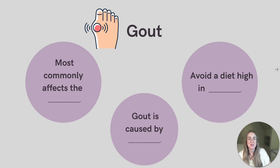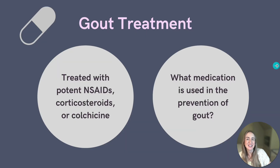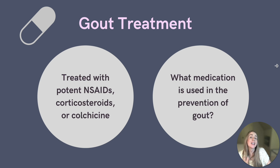The gold standard test to diagnose gout is a synovial fluid aspiration. Keep in mind that this is expensive and we can usually treat our patient based on the symptoms. During a flare, a potent NSAID like indomethacin or corticosteroids can be used. If the gout attack involves multiple joints, colchicine is often used. Allopurinol is the medication used in the prevention of gout.